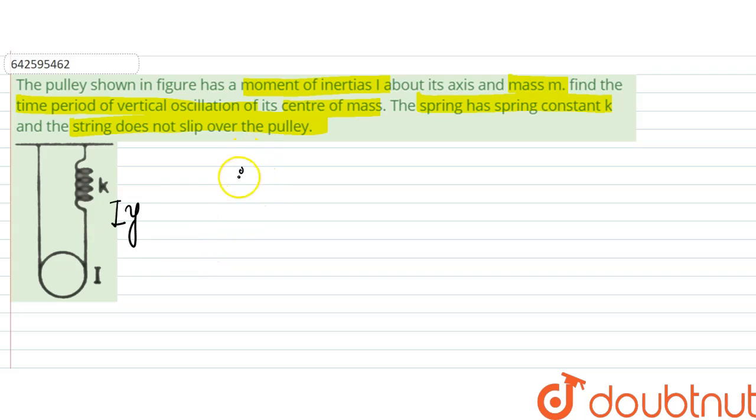So let us say that the extension here is y. Therefore, we can say that here the tension would be T and T, so ky can be equal to T. From here, y is equal to T by k.